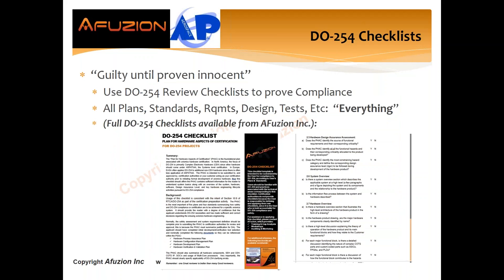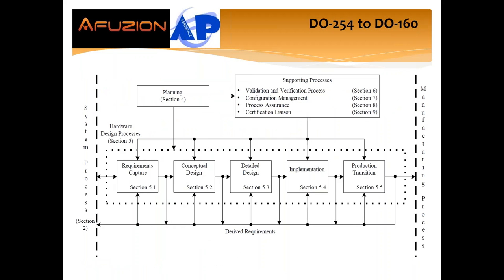Finally, we need checklists. Guilty until proven innocent — just like your expense reports need receipts, DO254 needs receipts, and those receipts are checklists. This is a cut and paste of one of our proprietary checklists — we have a full set, a couple dozen checklists from AFusion, all new and very thorough. They've been approved and used on many EASA and FAA projects. All plans, standards, requirements, design tests — everything needs a checklist. With that, I'd like to turn it over to Patrick from Aerospace Pals, our partner and a terrific source of DO160 expertise.